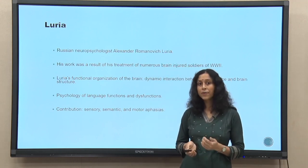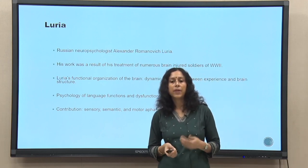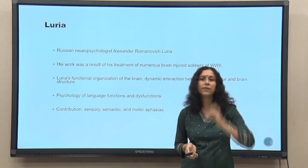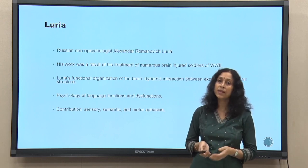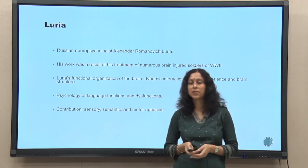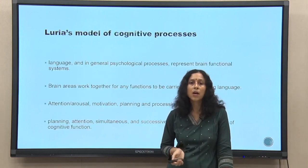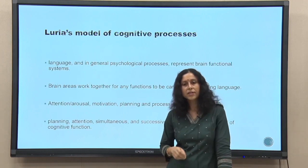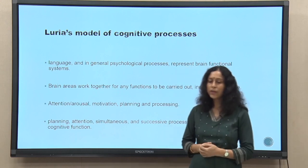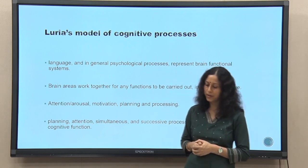In terms of psychology of language, Luria studied functions and dysfunctions in language, and his contribution is immense in finding various kinds of aphasia — sensory, semantic, and motor aphasia. In this segment we are not talking about aphasia as such, but about the model of cognitive processes that Luria gave us. He says that language and general psychological processes represent brain functional systems. The language output or any mental function is a result of functional systems in the physical brain.